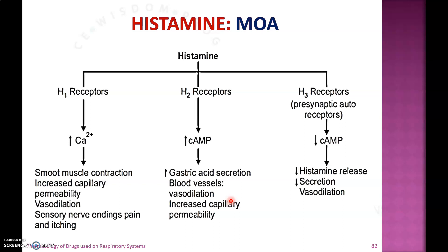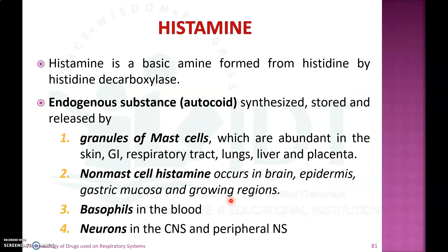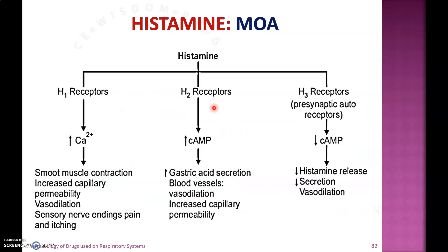Coming to the mechanism of action of histamine: whenever an inflammatory response occurs, there will be a release of histamine from the site of synthesis — like mast cells, non-mast histamine cells such as brain epidermis, or basophils. This histamine will bind with histamine receptors like H1, H2, and H3 receptors present at different sites, and they will produce some transducer mechanism.